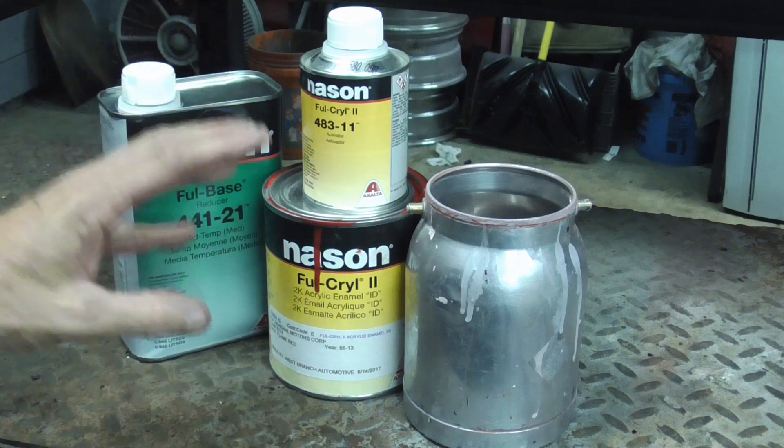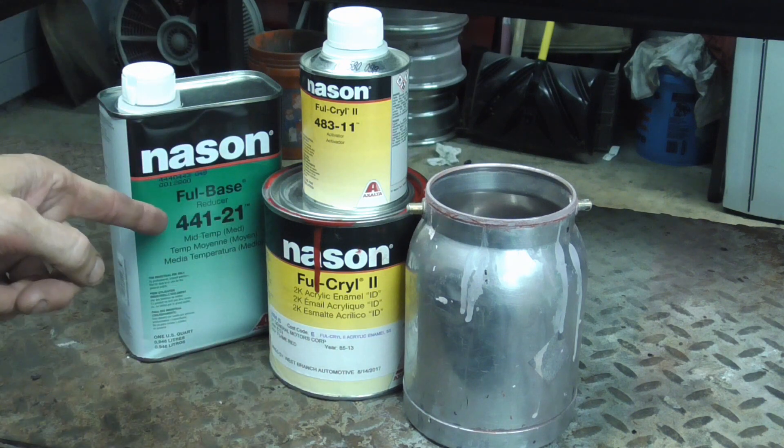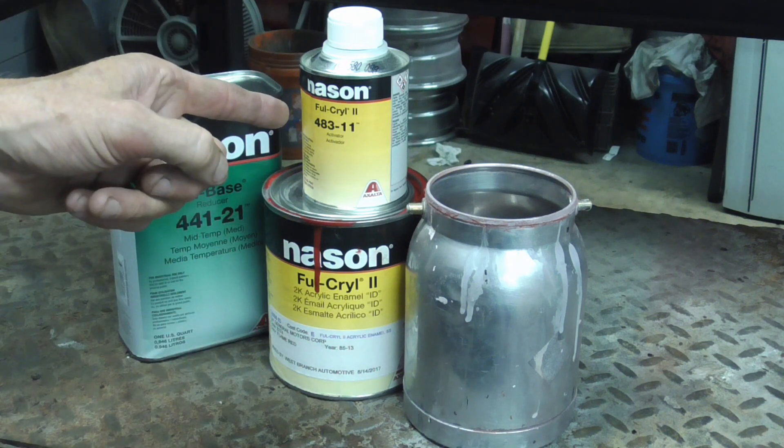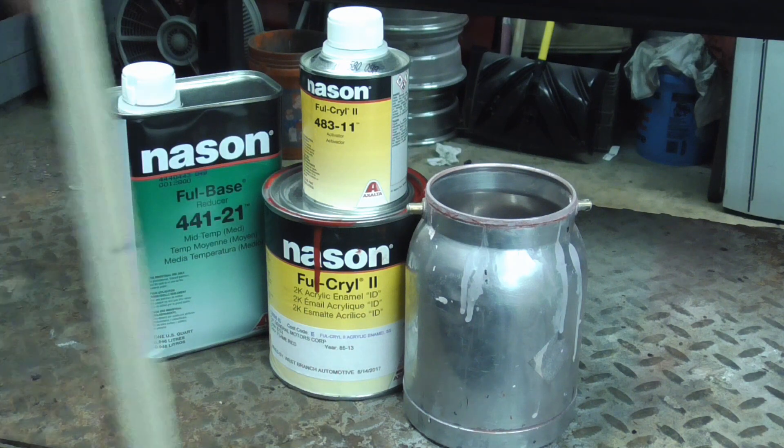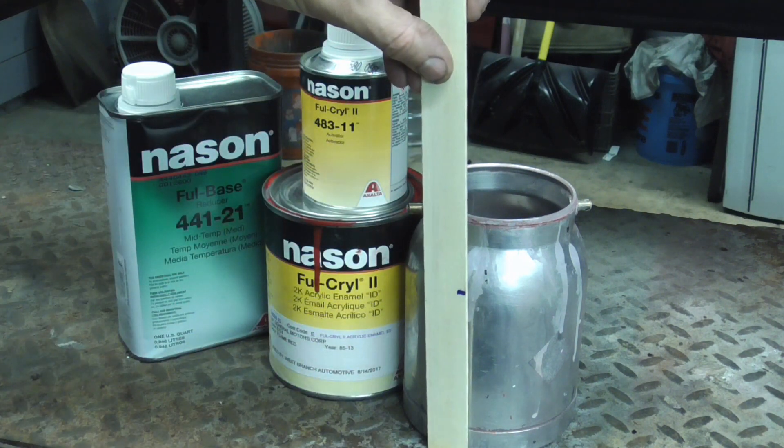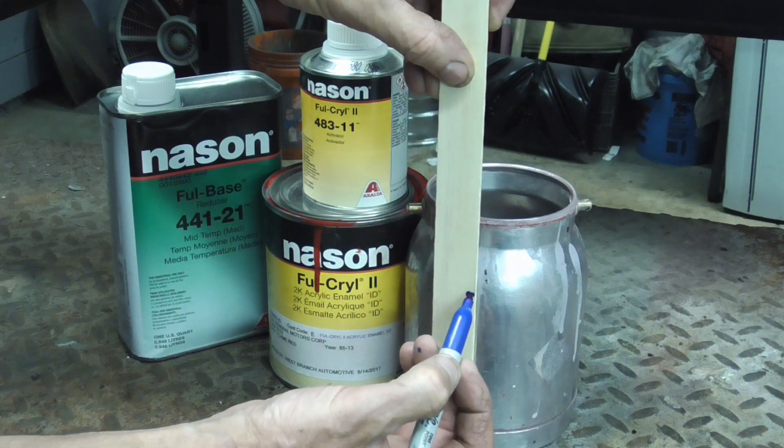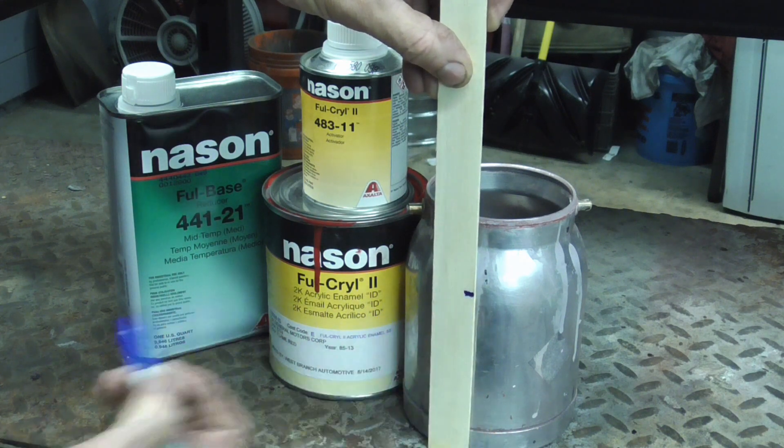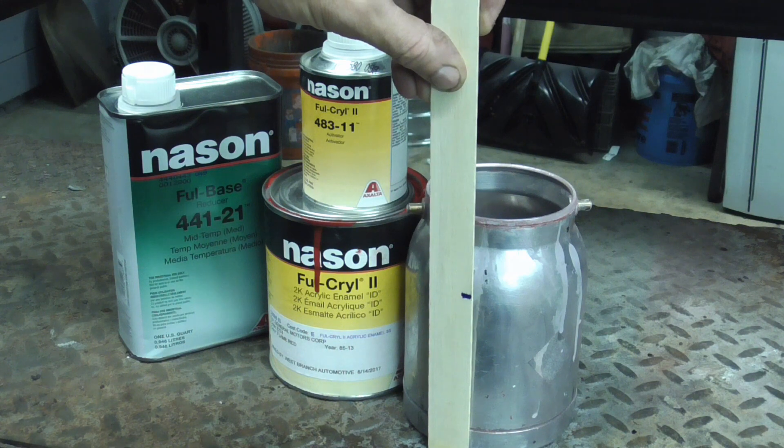This acrylic enamel calls for eight parts paint, two parts reducer, and one part hardener. So what I do is I'll take a paint stick so I don't have to clean up a mixing cup, and I just mark how much paint I want to mix up. So I'm going to mix up that much paint.